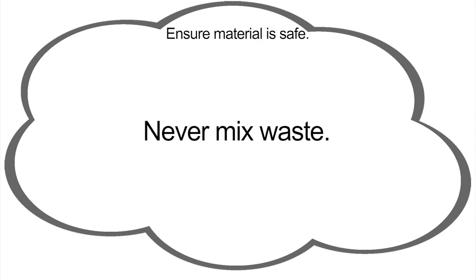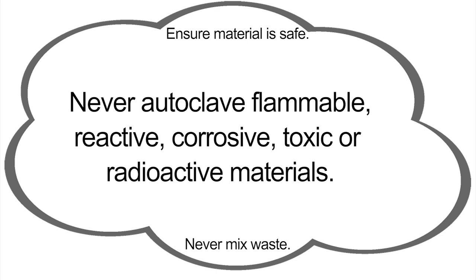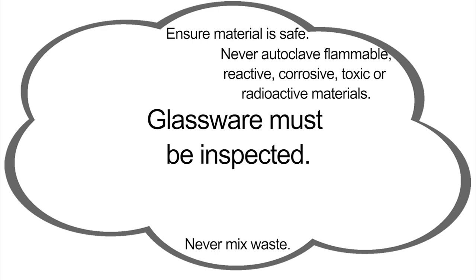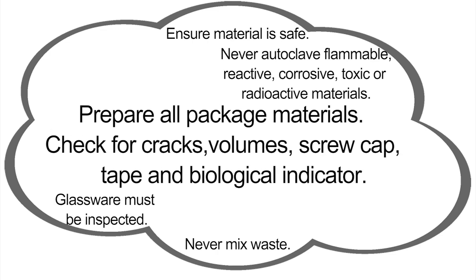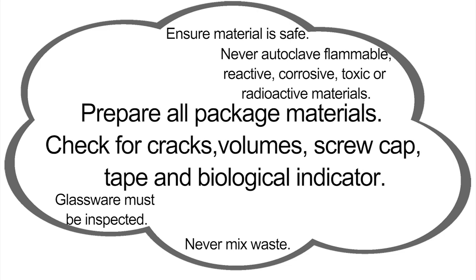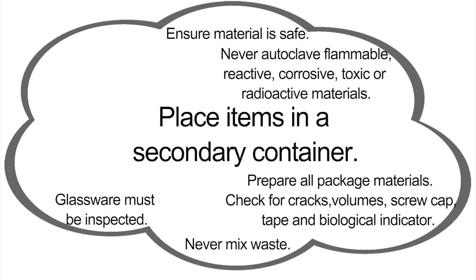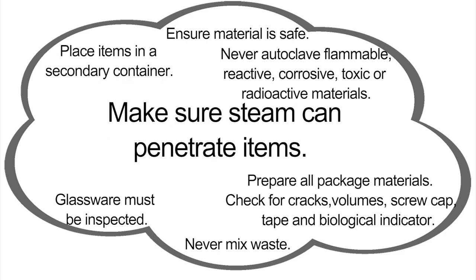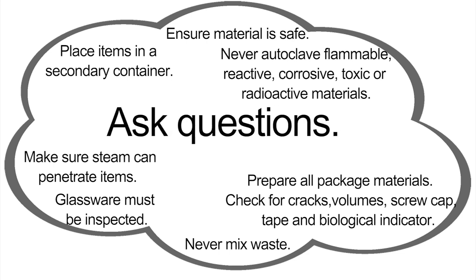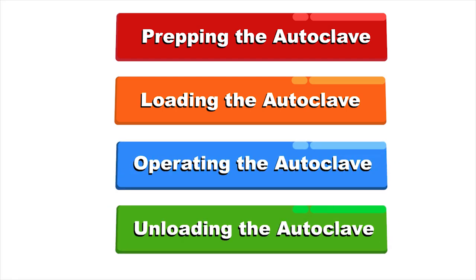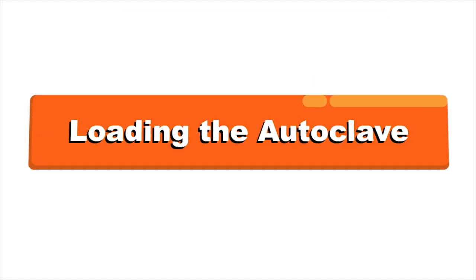To summarize preparing for autoclave use: ensure material is safe for autoclaving. Never mix waste and never autoclave flammable, reactive, corrosive, toxic, or radioactive materials. Glassware must be inspected for cracks prior to autoclaving. Prepare all packaged materials suitably. Check for cracks, double check volumes, and screw cap security, placement of autoclave tape, and/or BI. Place items in an autoclave rated secondary container to secure and contain spills and for ease of removal. Make sure steam can penetrate items for proper sterilization. Be sure to ask questions. Communication is key.